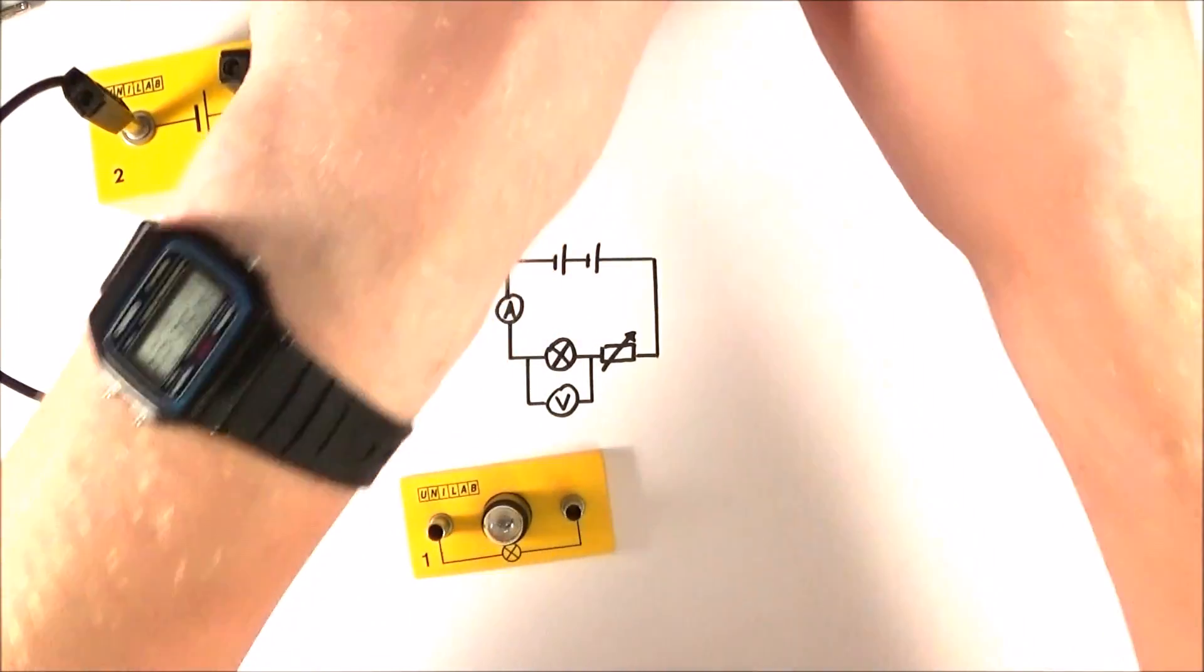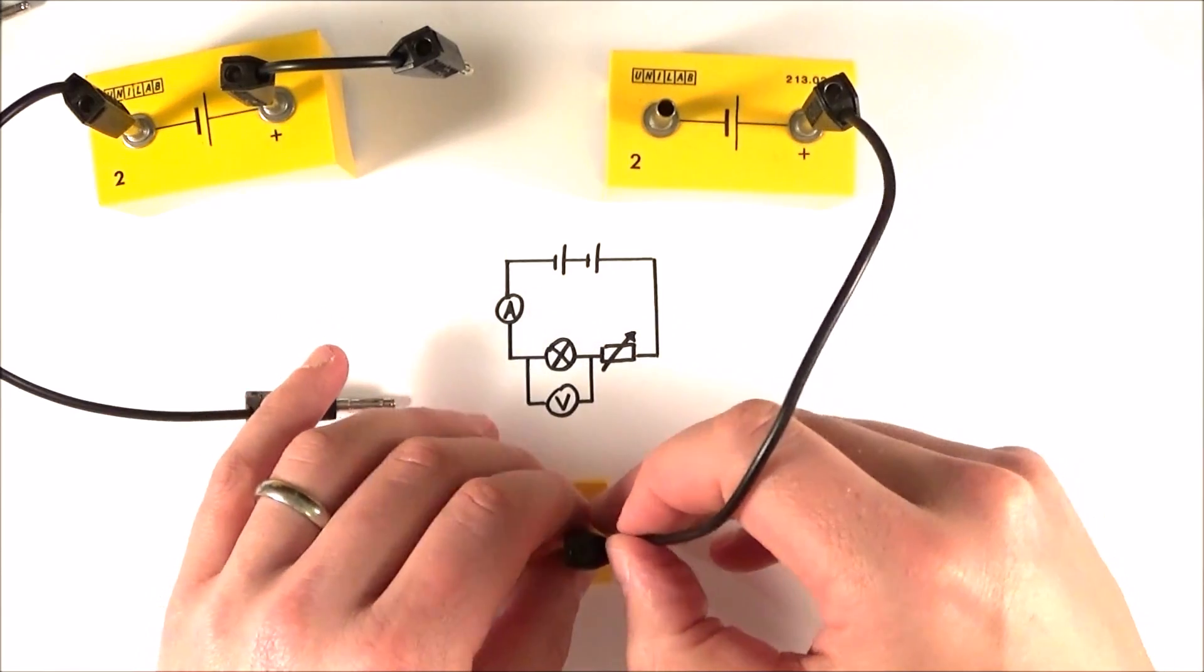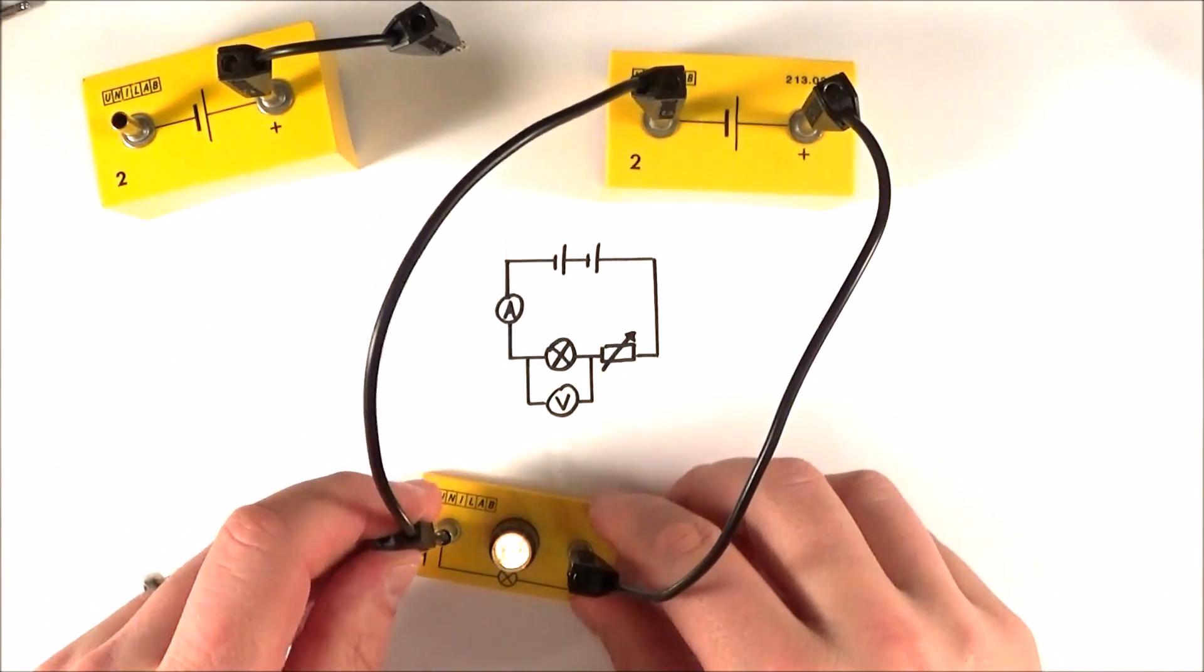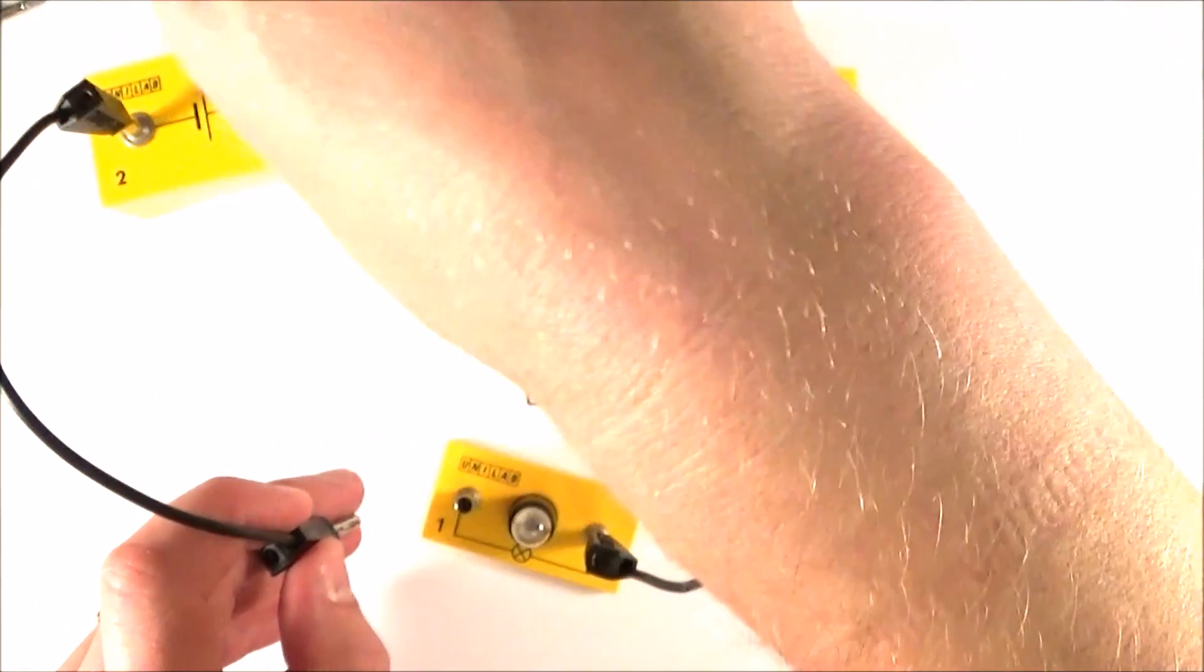I can then do the same with my other source of EMF. So I'm going to connect up this other part of the circuit to check my second cell is working. And if that's working, I can then basically set up the very simple circuit.